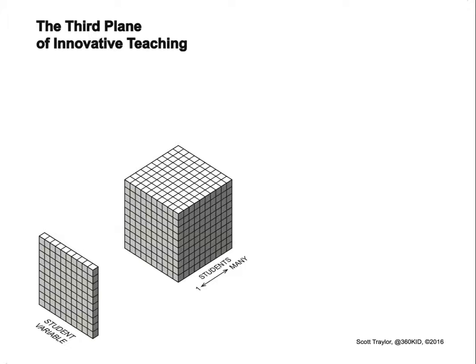It could be a product that's one student, a small group, whole group, 30 students, or a massively multiplayer product. But there is a dimension of the amount of students that might use your product.